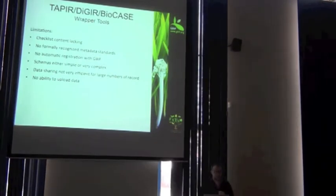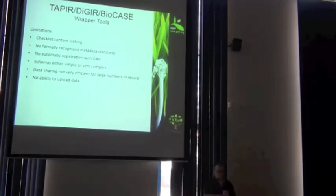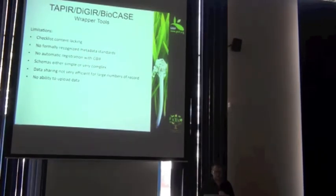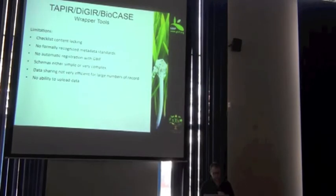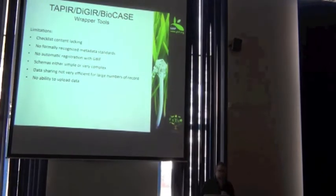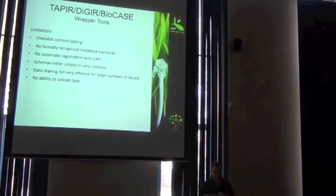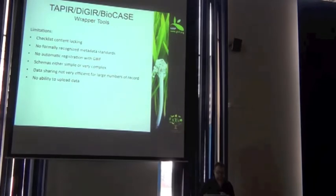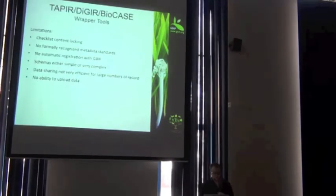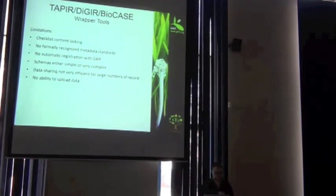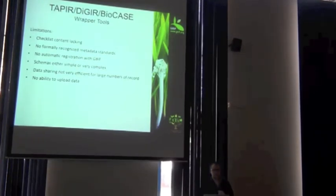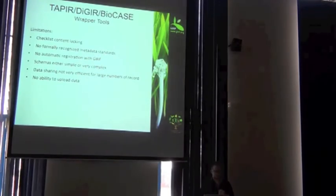Here were some of the limitations to these older wrapper tools. They weren't really able to handle checklists or taxonomic data. There was no use of a standard for metadata. There was no automatic registration with GBIF. The schemas were either very simple or they were way too complex. And as I demonstrated in the last slide, the data sharing, being able to harvest the information, is not very efficient, especially with large numbers of records. And there was no ability to upload Darwin Core Archives.